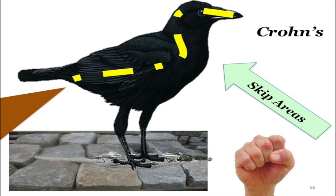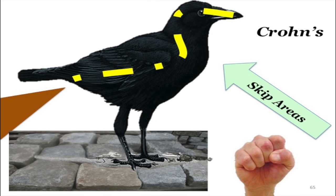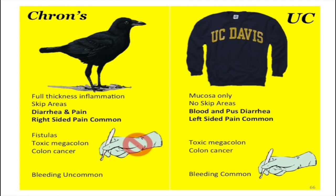Crohn's disease has non-bloody diarrhea, cobblestone appearance on colonoscopy, and likes fistulas and abscesses. Crohn's is full-thickness inflammation, skip areas, more common on the right side, and surgery doesn't fix it — it only treats complications. Ulcerative colitis is mucosal thickness only, no skip areas, lots of blood, and surgery can fix it — remove the diseased bowel and they're fixed. Crohn's is right-sided pain; ulcerative colitis is left-sided.